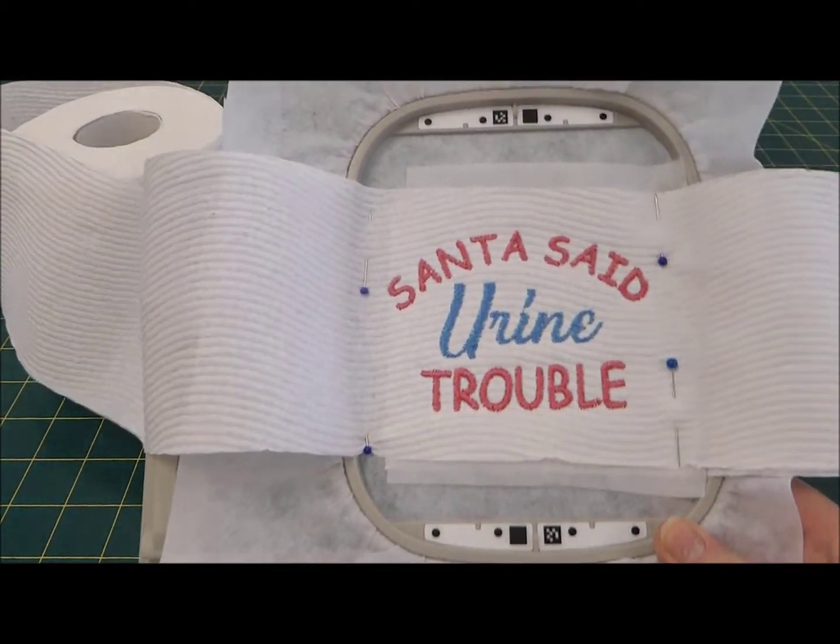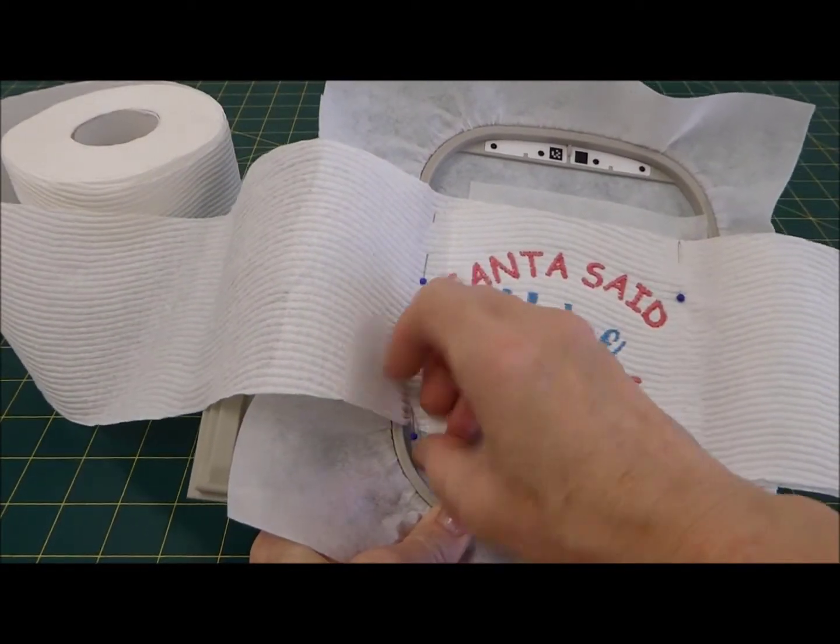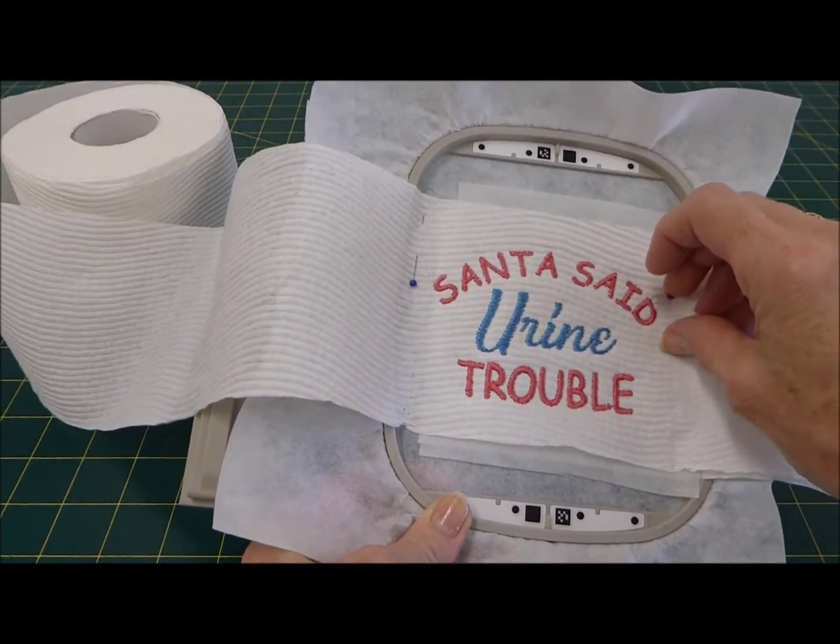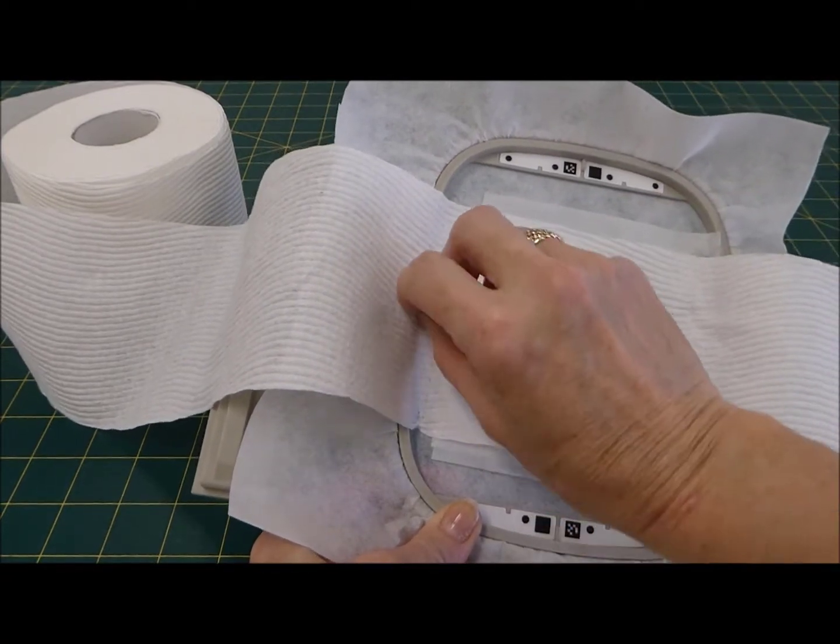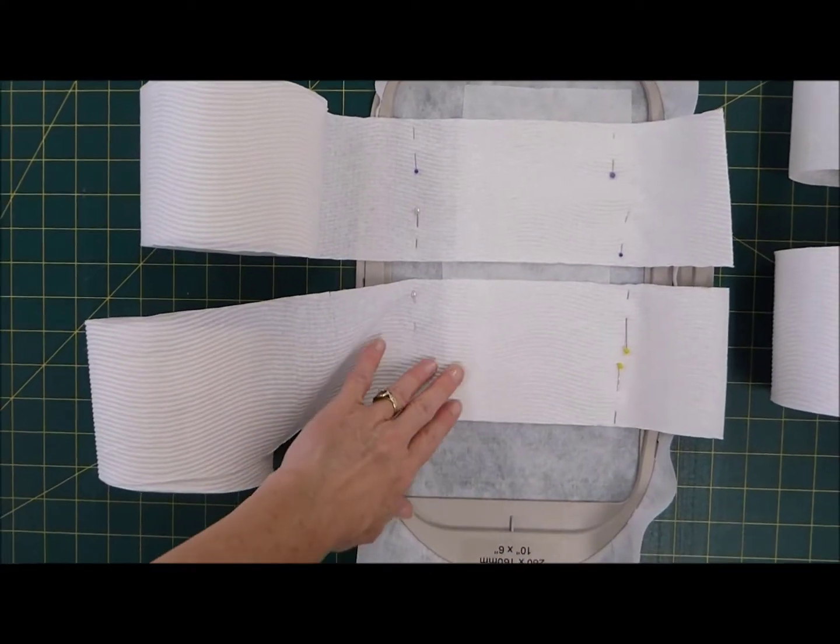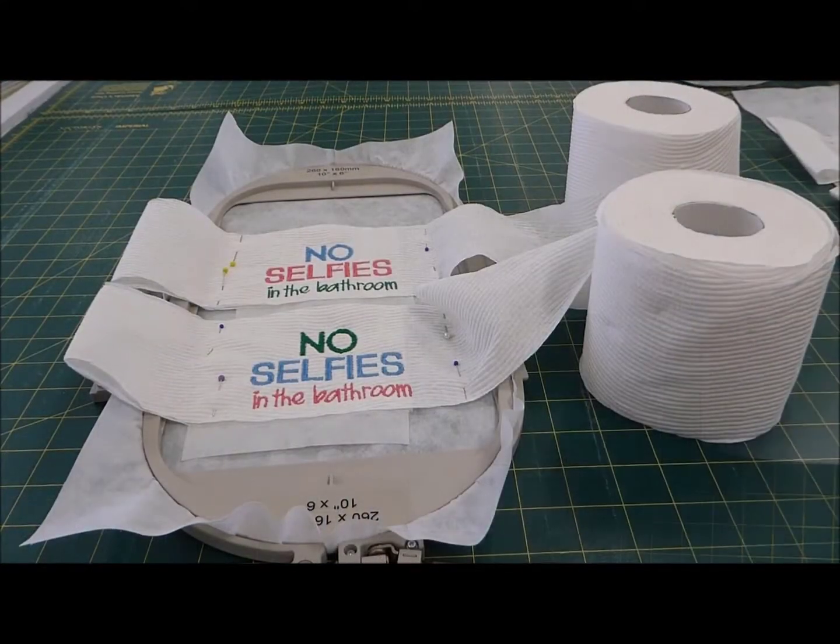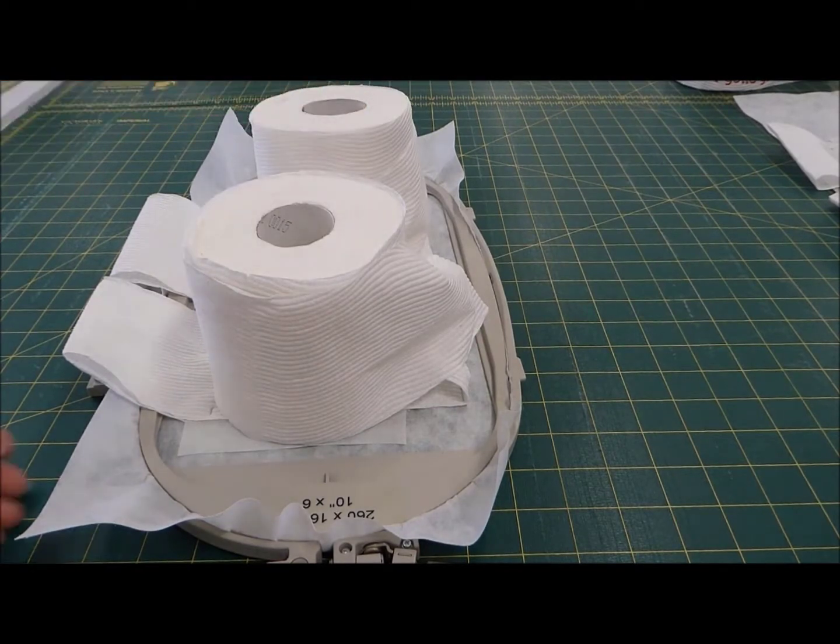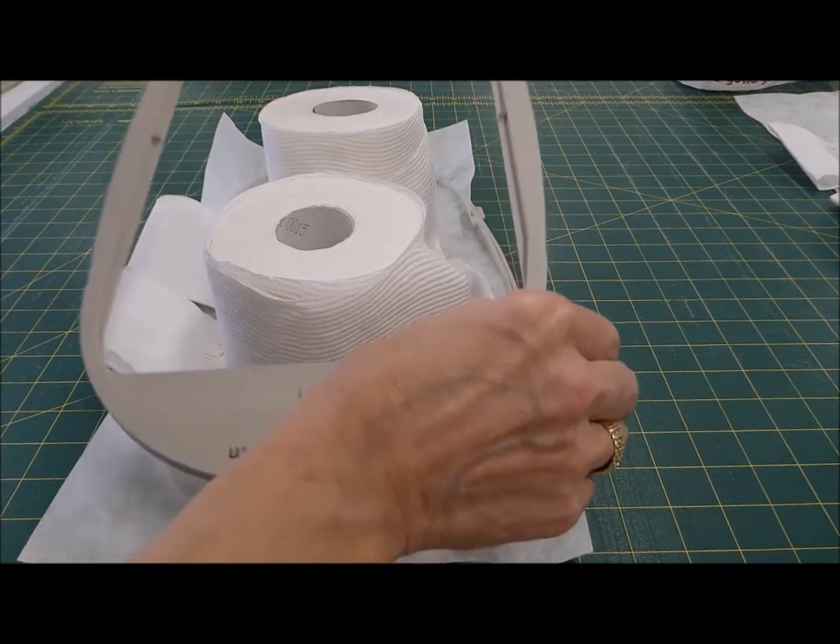The toilet roll has now been embroidered. We just simply remove the pins very carefully, very carefully so that you don't damage the toilet paper. So for positioning more than one toilet roll, you can just line them up one underneath the other in a larger hoop. A nice easy way to remove the toilet roll from the hoop is to place the rolls on top, release the bottom hoop from the top, and that way the hoop just comes straight off.